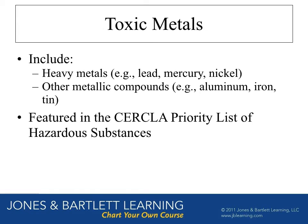When we say toxic metals, what are we talking about? These include heavy metals such as lead, which has come to light again with the Flint, Michigan water supply situation; mercury, especially with respect to contamination in fish we eat — eating fish is good for you, but eating fish with mercury may not be, especially for subpopulations like pregnant women. Nickel and other heavy metal compounds, as well as things like iron, tin, and aluminum.